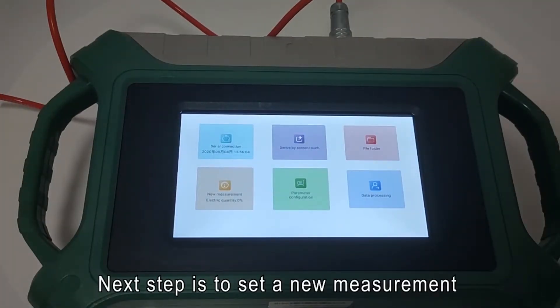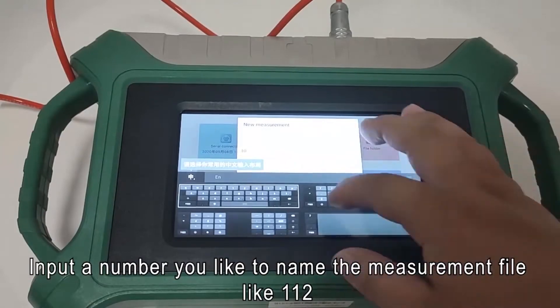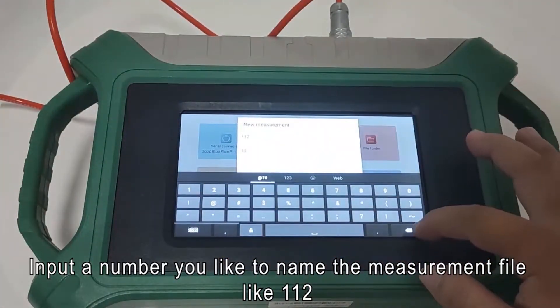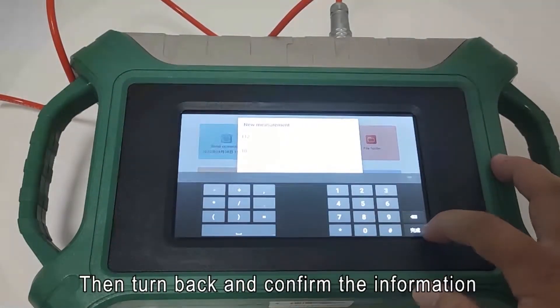Next step is to set a new measurement. Input a number you like to name the measurement file, like 112. Then turn back and confirm the information.